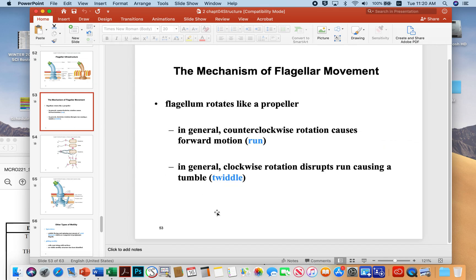The mechanisms of movement: the flagellum basically rotates like a propeller. In microbes in general, a counterclockwise rotation results in a forward run, whereas a clockwise rotation disrupts the run and causes the microbe to tumble or twiddle. A run would look like this, and then if the microbe decides that it doesn't want to keep going straight, it'll tumble a little bit, vibrate in place, and then go a different direction. That's the result of constant counterclockwise and clockwise rotational changes.